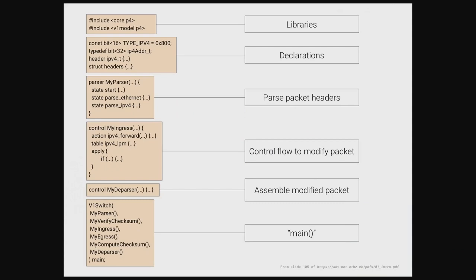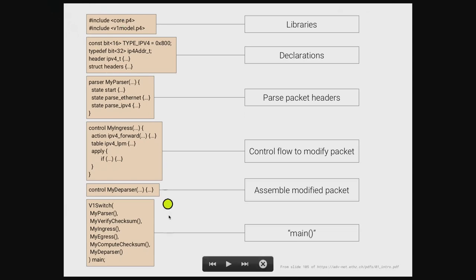Here's what the code looks like. There's a core model — kind of like libc if you're familiar with C programming. A lot of examples gravitate towards the v1 model, a generalized model you can run in Mininet with the behavioral switch. We do some declarations — IPv4, what an IPv4 address looks like, 32-bit, some headers. I have my parser referencing those declarations, then my control flow for things like longest prefix match, then I de-parse it — and that last bit is like my void main or int main.